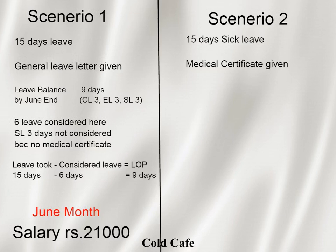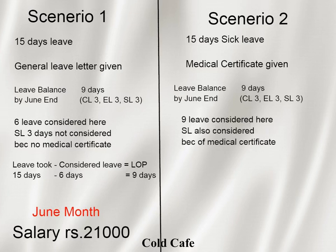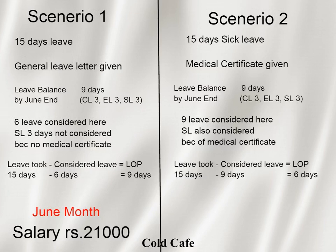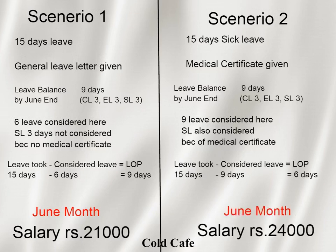Let's take another example — same 15 days of leave. But this time, if I submit a medical certificate, the company will also deduct my sick leave. So sick leave three, earned leave three, casual leave three — all nine days are considered from my leave balance. The remaining six days only are considered as loss of pay. So I receive 24,000 as my salary. In the first scenario I got 21,000 because I didn't give a sick leave letter. In the second scenario I gave a medical certificate, so I get 24,000 because my sick leave was also considered. This is how salary calculation works.